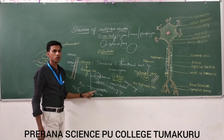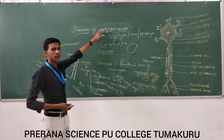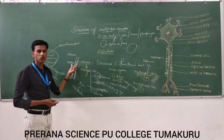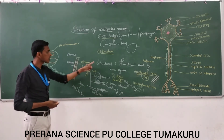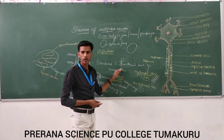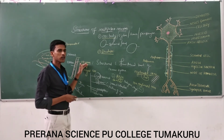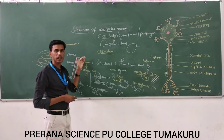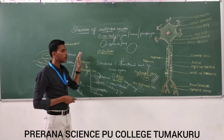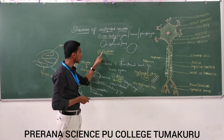So once again I repeat: each nervous tissue is built from cells called neurons. Neurons are the structural and functional unit of the nervous system. Neurons are the largest cell in the human body. Neurons are microscopic — we cannot see them with our naked eyes but we can observe them under a microscope. When observed under the microscope, we can see three portions: cell body, dendrites, and axon.